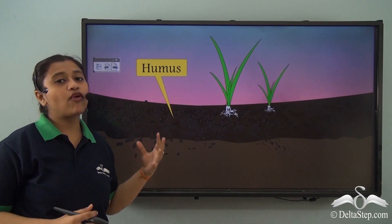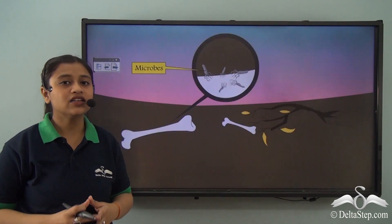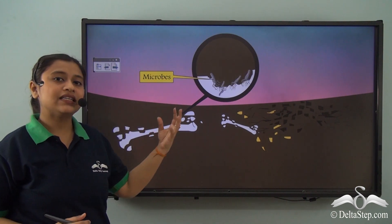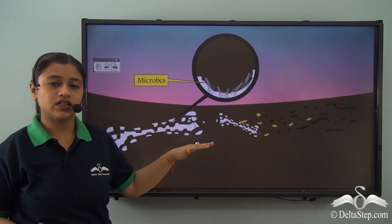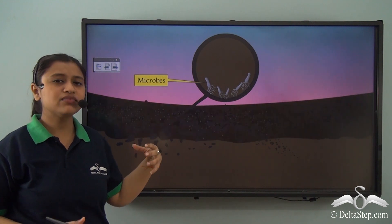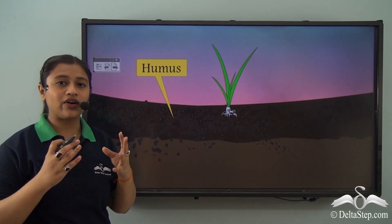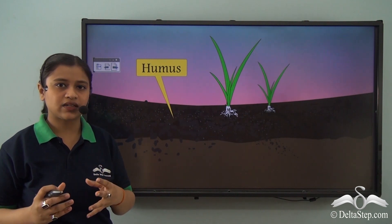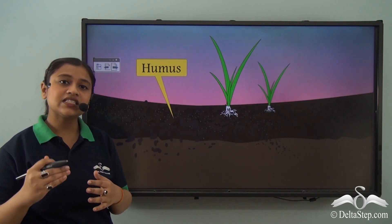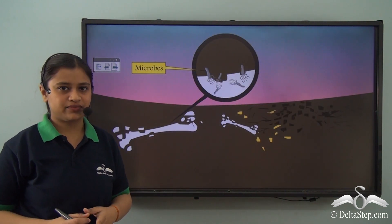Let's learn about the role of microorganisms in soil formation. Dead plants and animals on the surface of the earth are decomposed by microorganisms, which eventually leads to the formation of organic matter called humus. This humus increases the fertility of the soil and leads to healthier crop production.